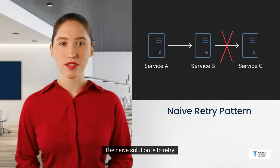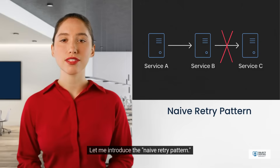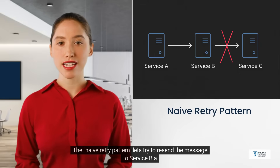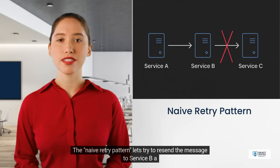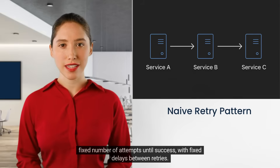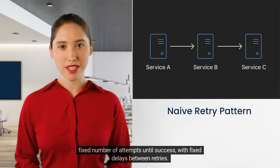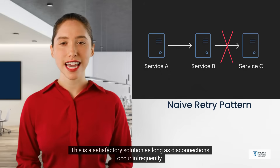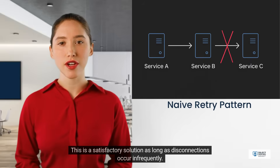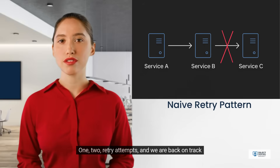The naive solution is to retry. The naive retry pattern lets us resend the message to service C — a fixed number of attempts until success, with fixed delays between retries. This is a satisfactory solution, as long as disconnections occur infrequently. One or two retry attempts, and we are back on track.